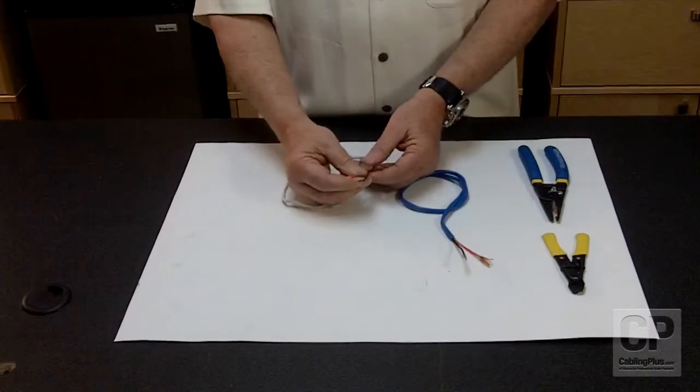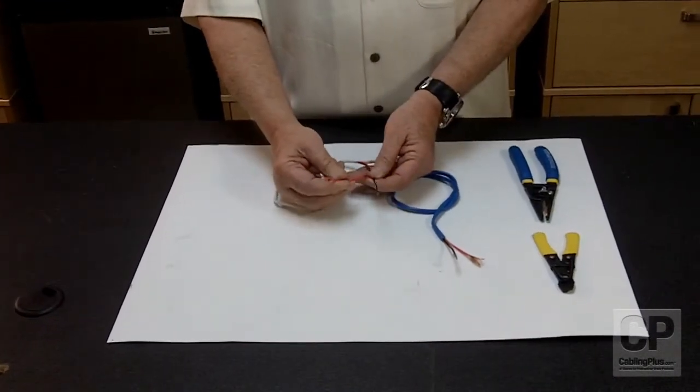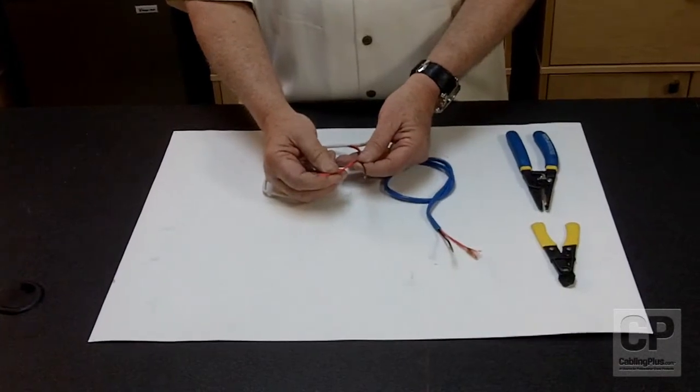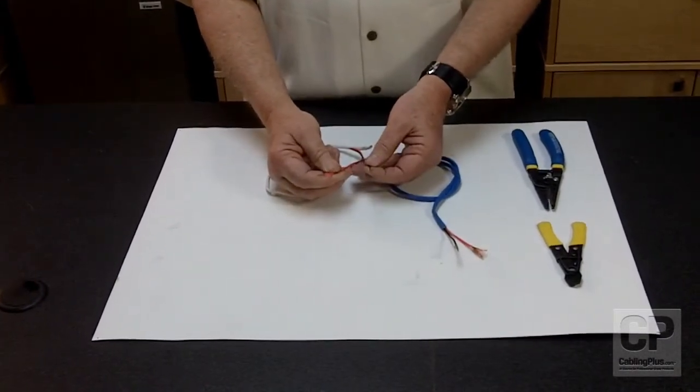As you can see, the two conductors are black and red, and the reason for that is a lot of speakers require polarity. So the black is for negative, and your red is for positive.